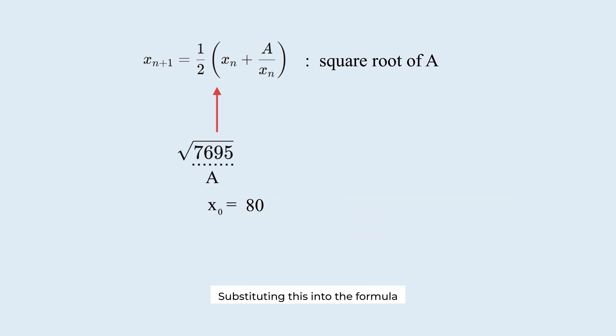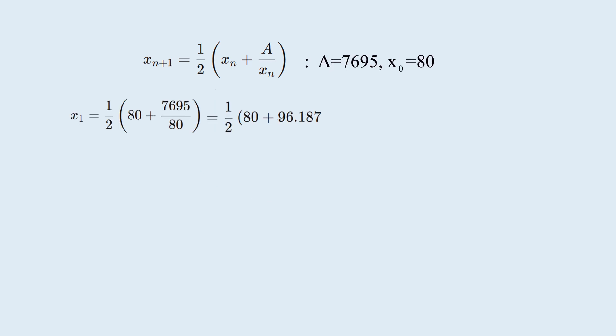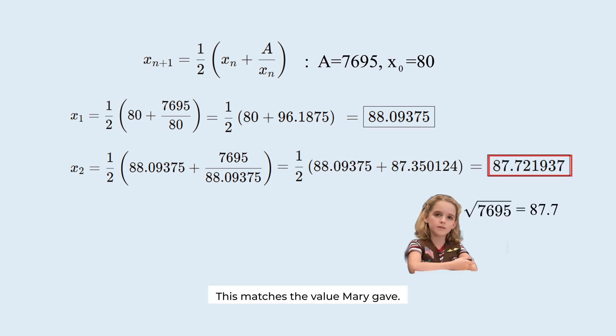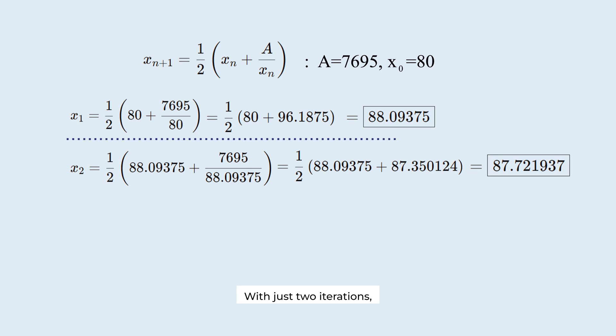Substituting this into the formula gives us the first approximation. We then plug this value back into the formula. The second approximation is this. This matches the value Mary gave. With just two iterations, we've reached a highly accurate approximation.